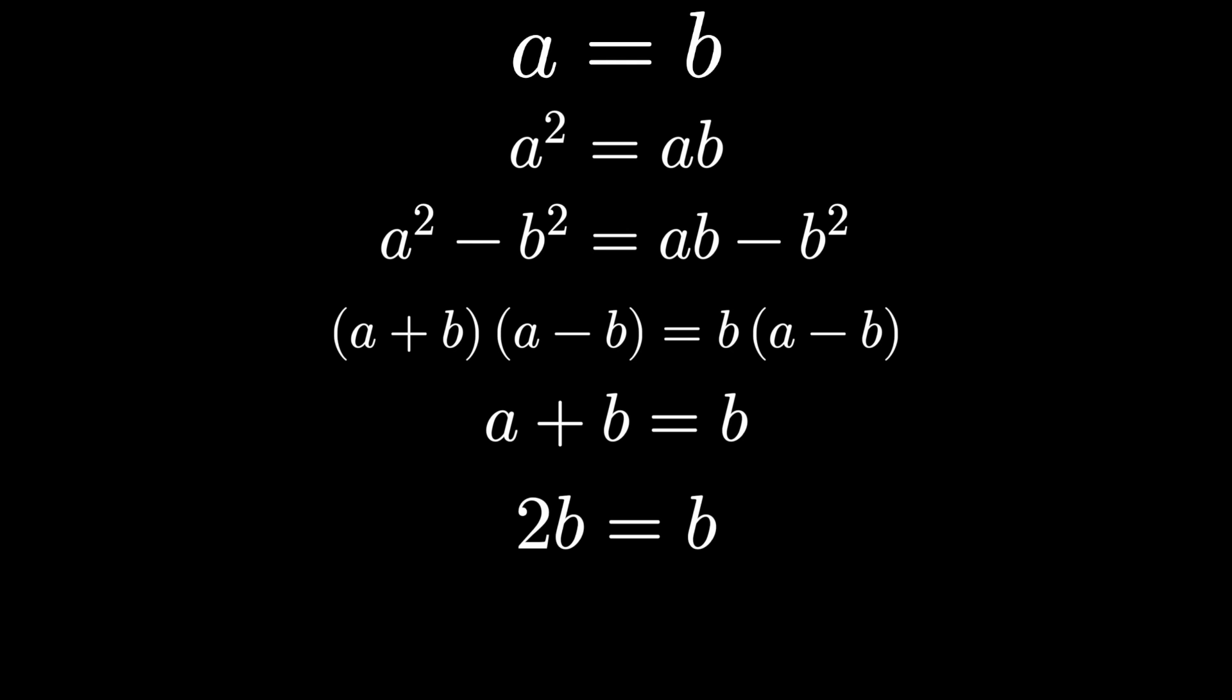So 2b equals b, and dividing both sides by b gives us 2 equals 1. I doubt you believe that, but what went wrong algebraically?